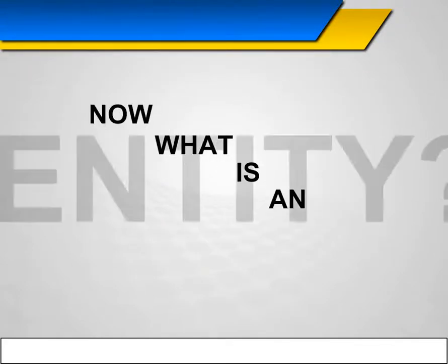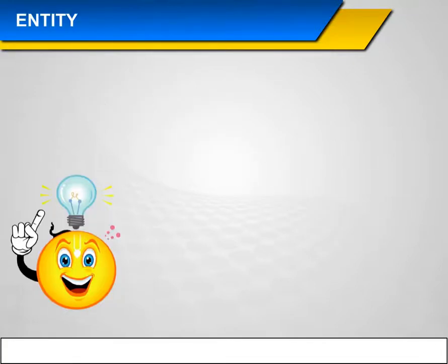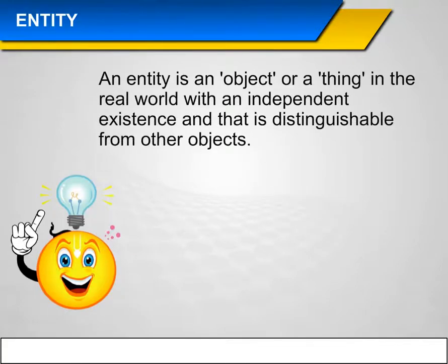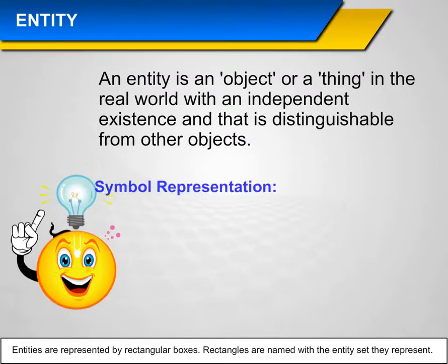What is an Entity? An entity is an object or a thing in the real world with an independent existence that is distinguishable from other objects. Entities are represented by rectangular boxes. Rectangles are named with the entity set they represent.